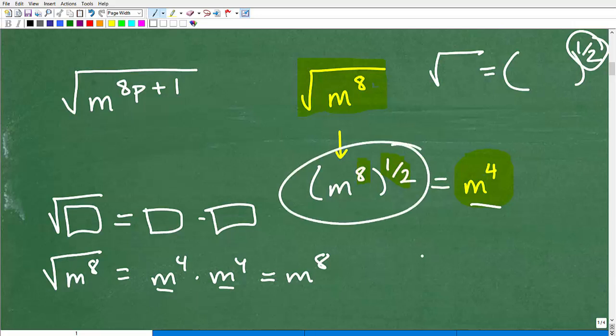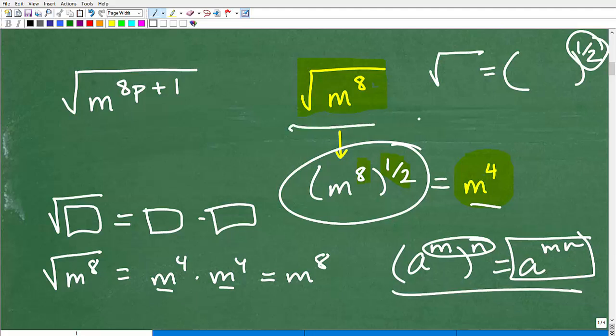Also on this, you need to understand this property: a to the m to the n is equal to a to the m times n. In other words, when we're taking a power to another power, these exponents you simply multiply. To do these square root problems, these radical problems, you need to be really good with the properties of powers and exponents. Typically, this is taught after you learned that particular skill and chapter. In my algebra course, we do this before we get into radicals, because you need to understand powers and exponents in order to be able to handle radical and square root problems.